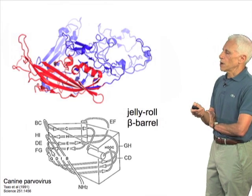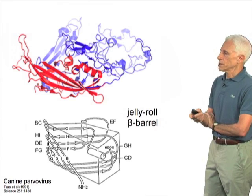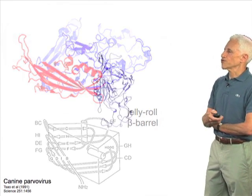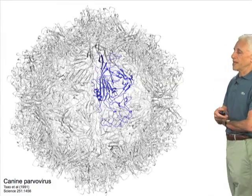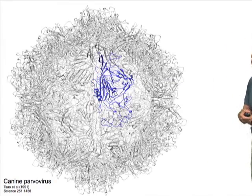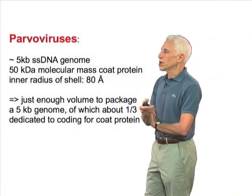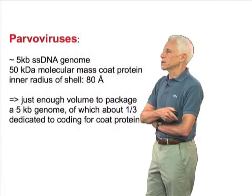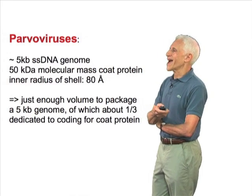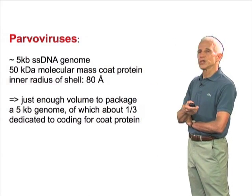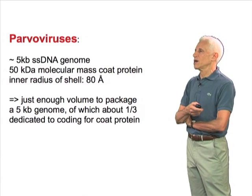In this case, the simple jelly roll beta barrel structure has been elaborated with loops in order to make a particle of adequate size, as shown here, and that particle can package about a 5 kilobase single-stranded DNA genome.